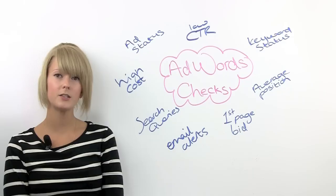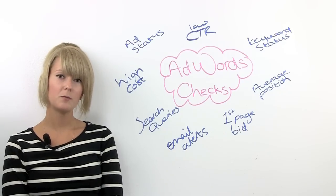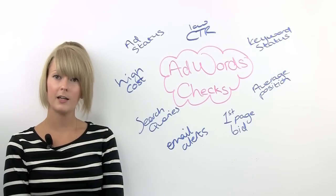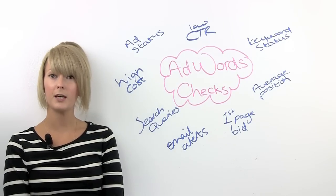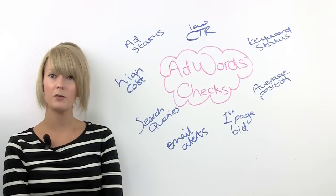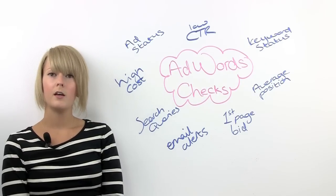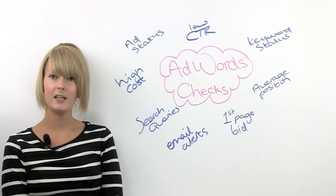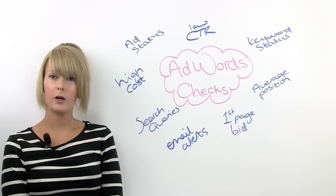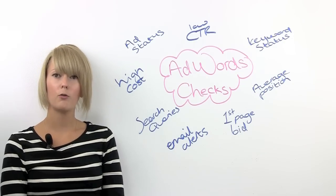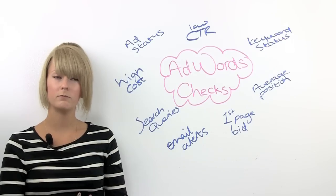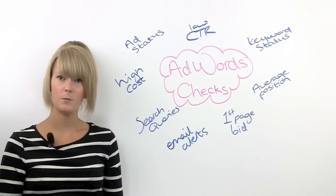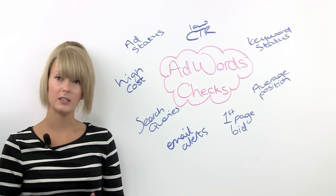If a keyword is using up a lot of your budget, you should make sure you're getting a good return from this. Look to see if you've got conversion tracking, whether this keyword is bringing in a good number of conversions and whether it has a good conversion rate. If you don't have conversion tracking, look in Google Analytics and see how long people from this keyword are spending on the site, how many pages they're looking at, and whether they're getting a good level of engagement and whether it's worth what it's costing you.